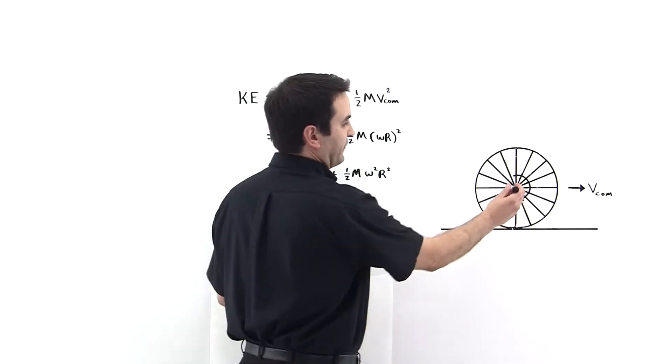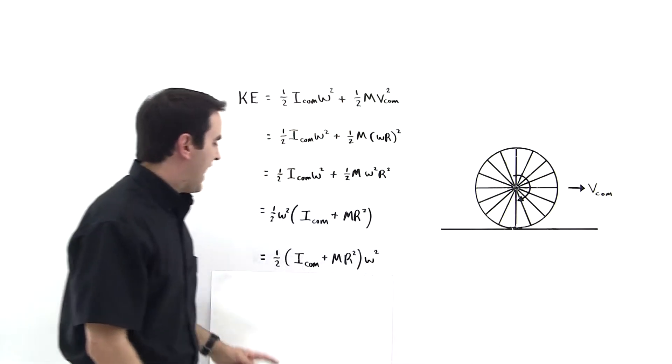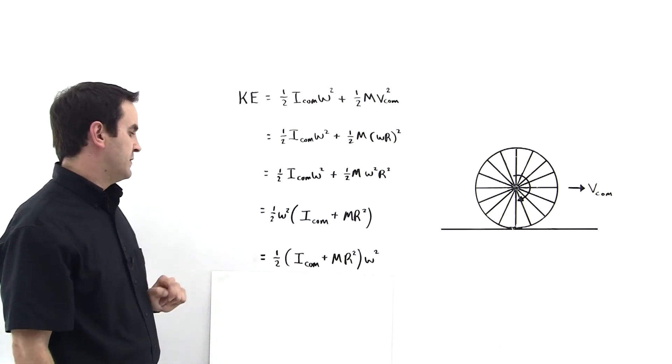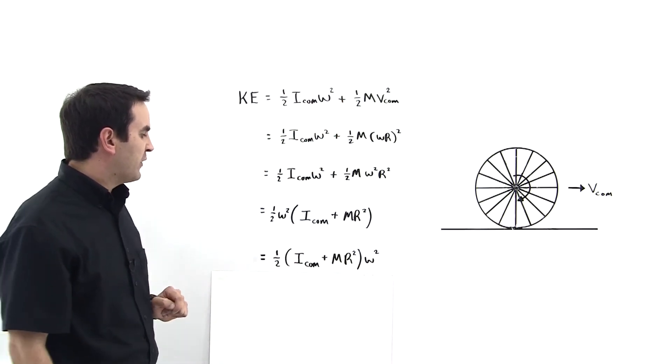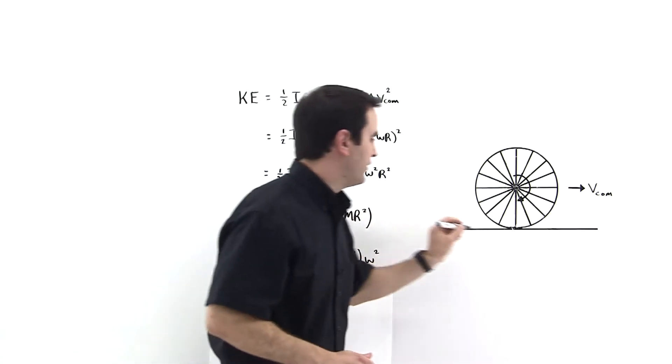So to get from this axis to this axis, we add m r squared. Okay, so let's label this point down here at the bottom, p.